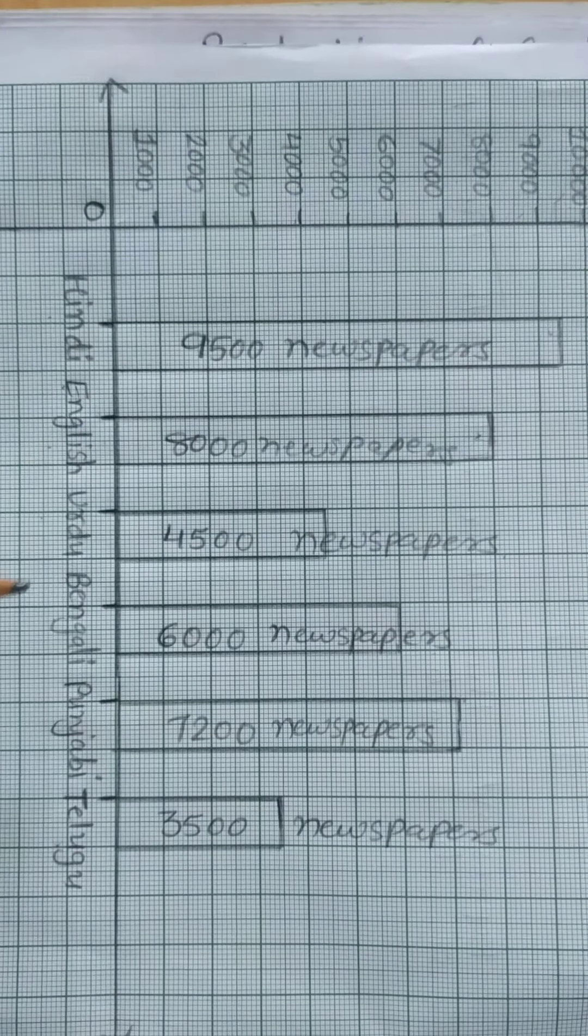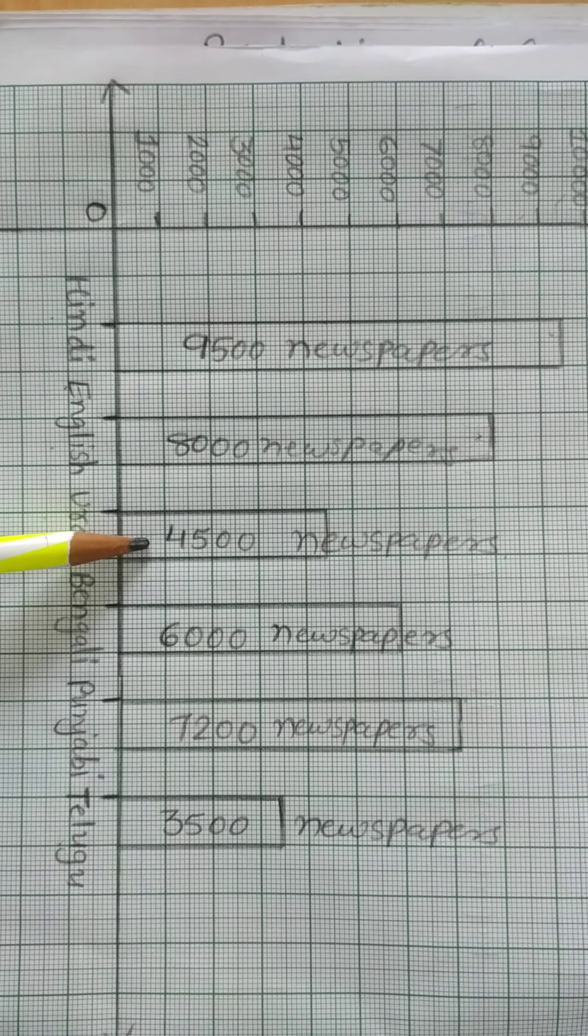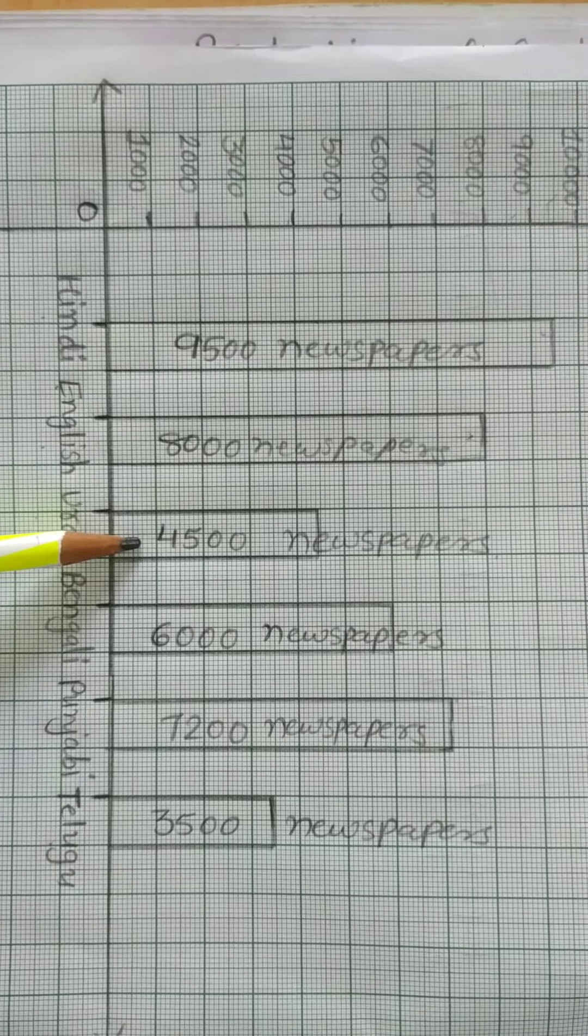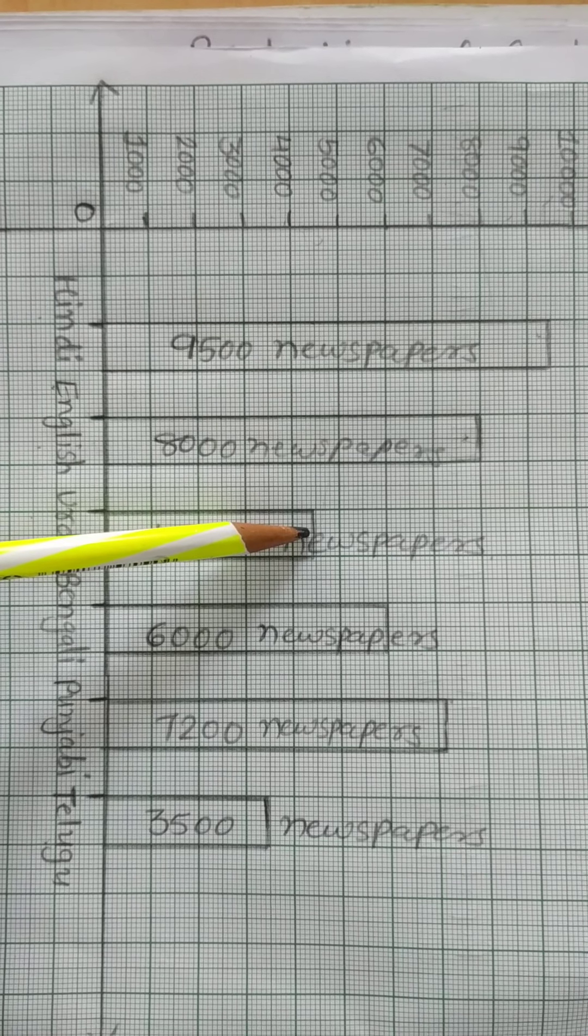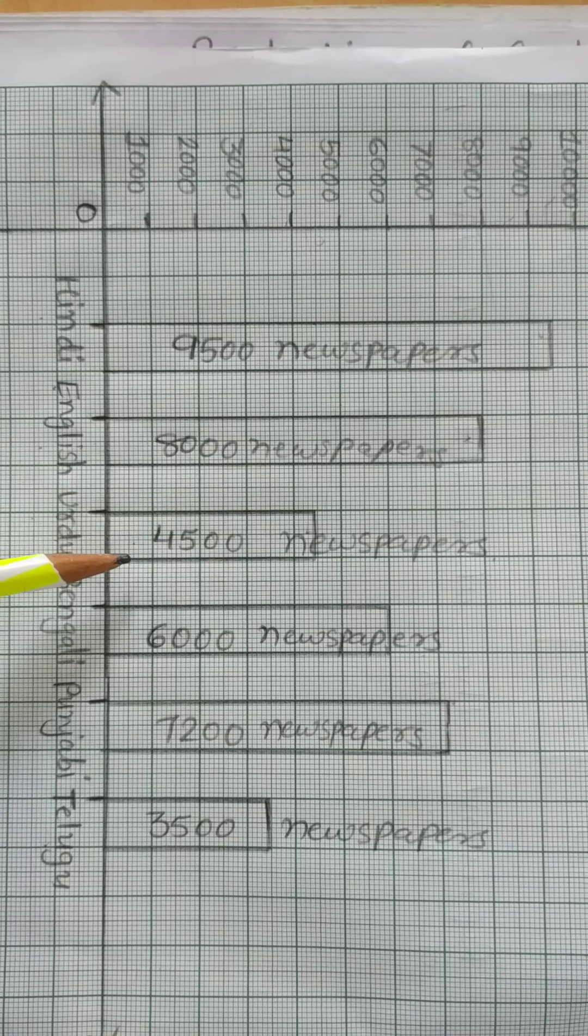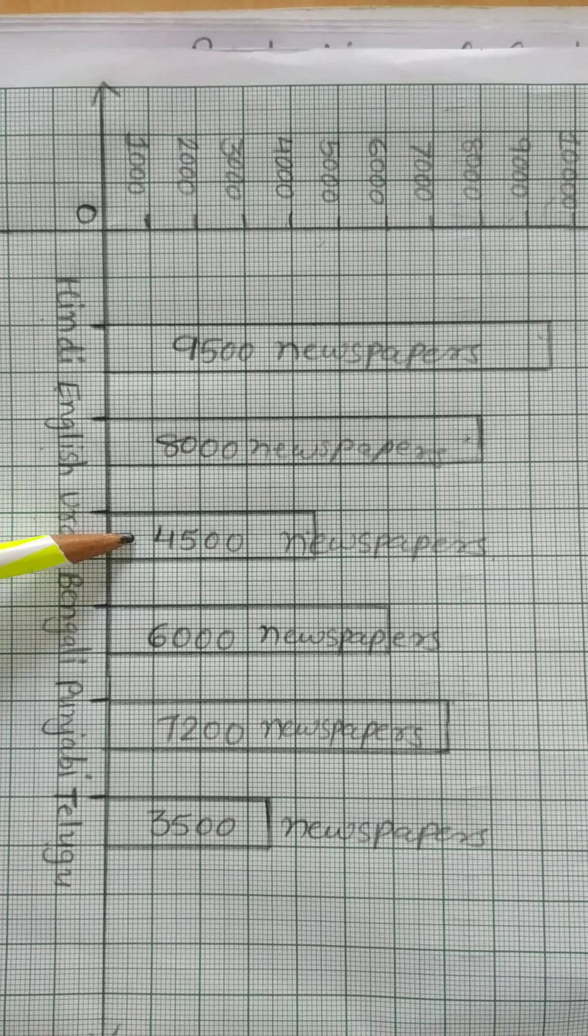For English 8,000, so I start from zero and 8,000 is here. So up to 8,000 I make the bar. For English 8,000 newspapers. This way you write it. Then Urdu, in Urdu 4,500. So 4,500 is between 4,000 and 5,000. So here I will make the bar from zero to here. Inside write 4,500 newspapers.